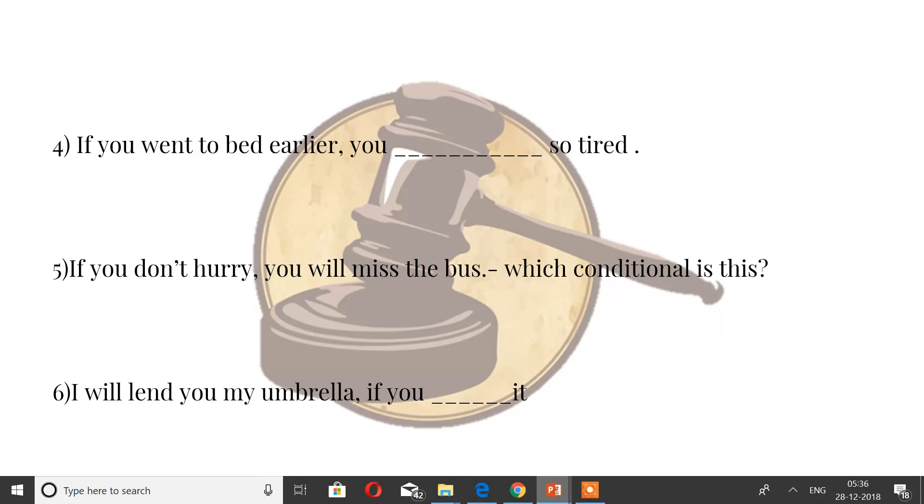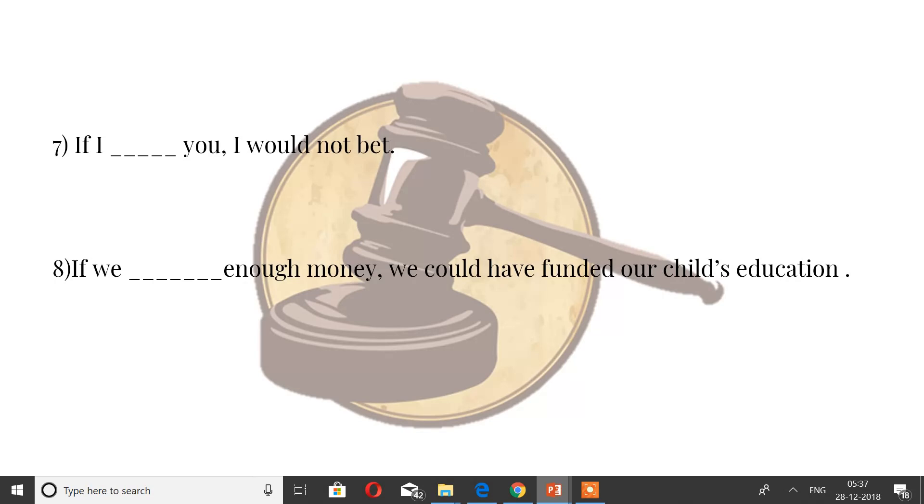Fifth question is a different question. It's about: if you don't hurry, you will miss the bus. Which conditional is this? You have to identify the type of conditional. And I will lend you my umbrella if you blank it. They're easy questions, just make sure you have the right tense. If I blank you, I would not bet. This is again the second conditional. Make sure you fill it with the right verb.